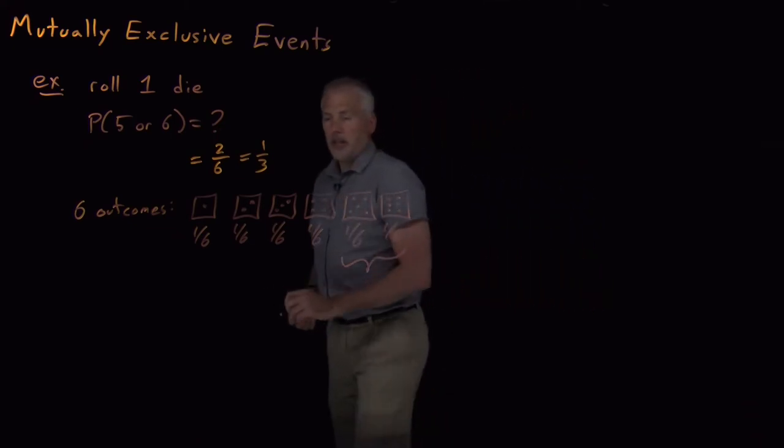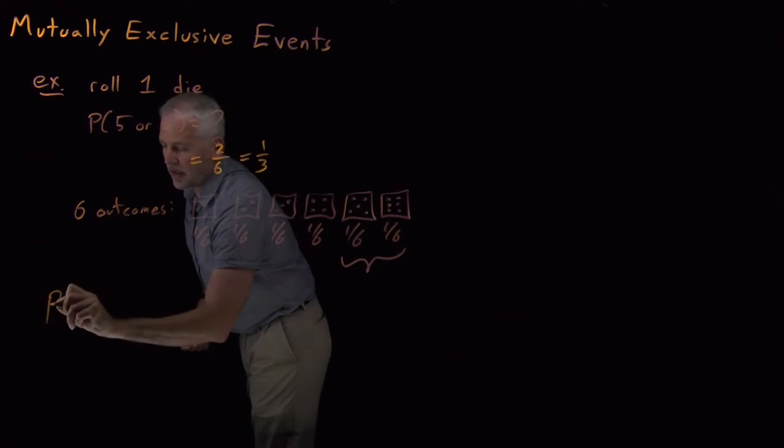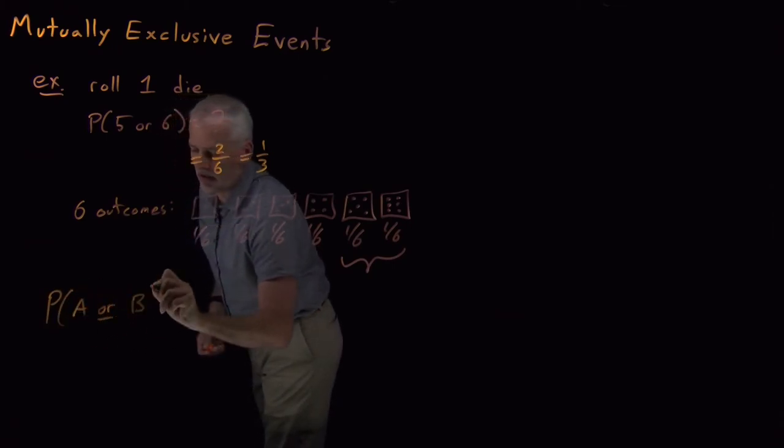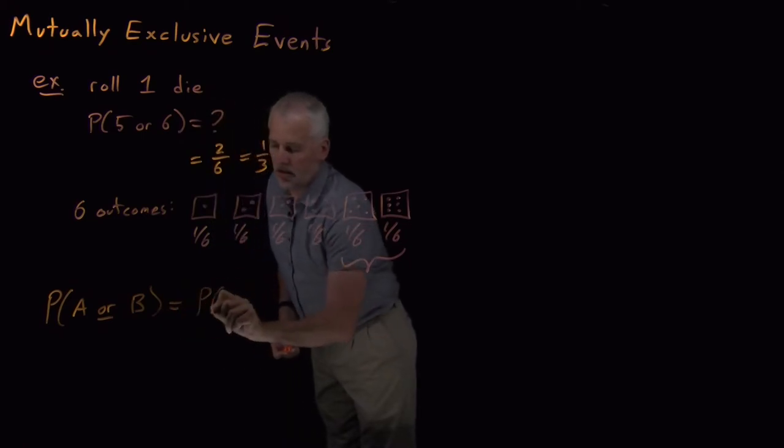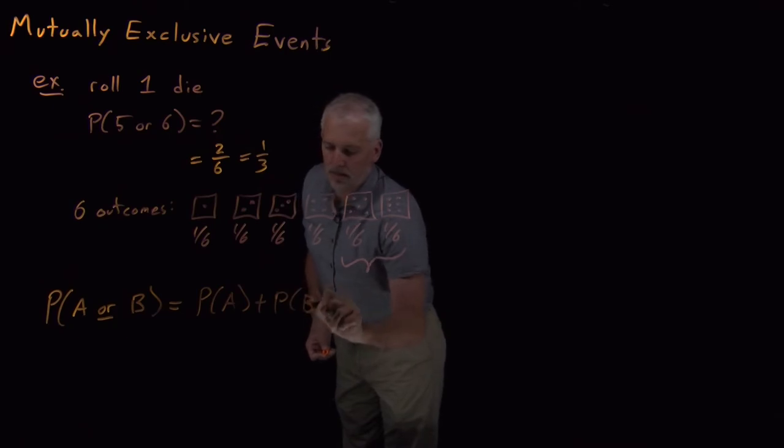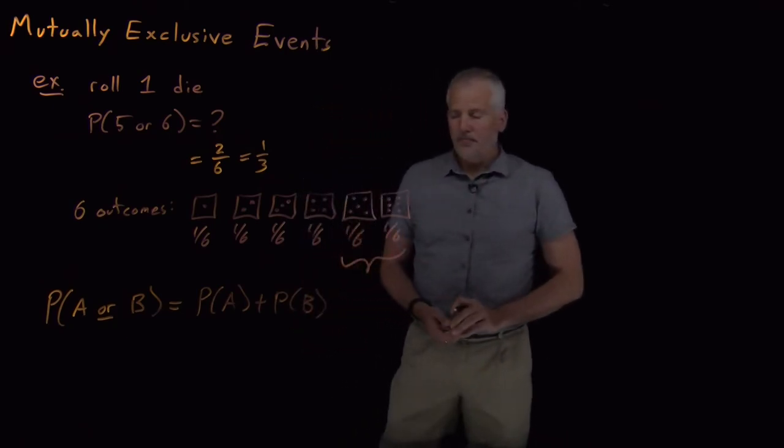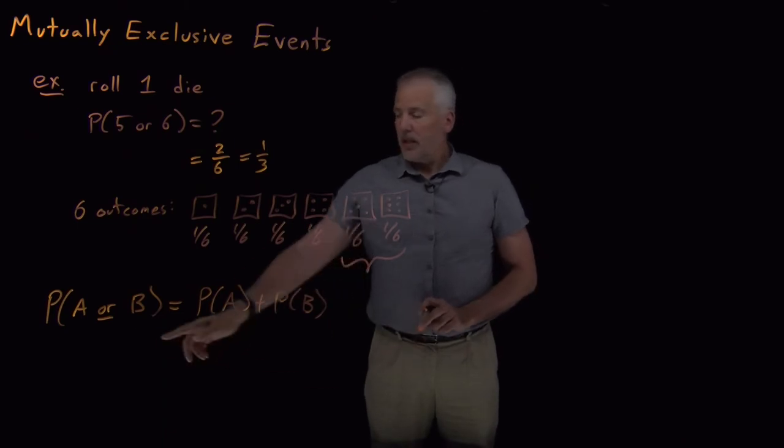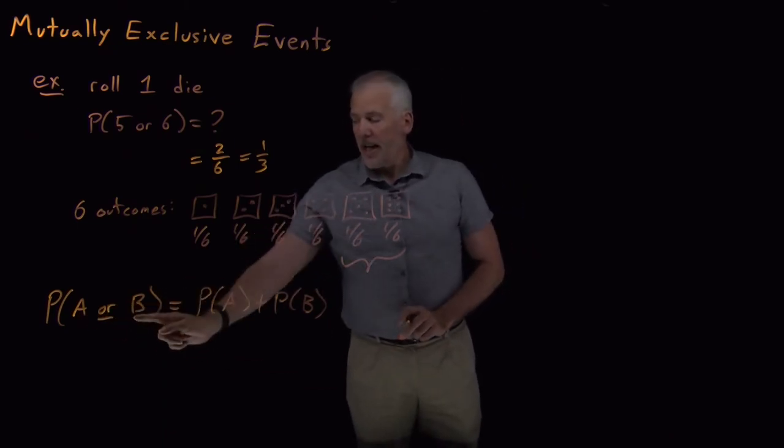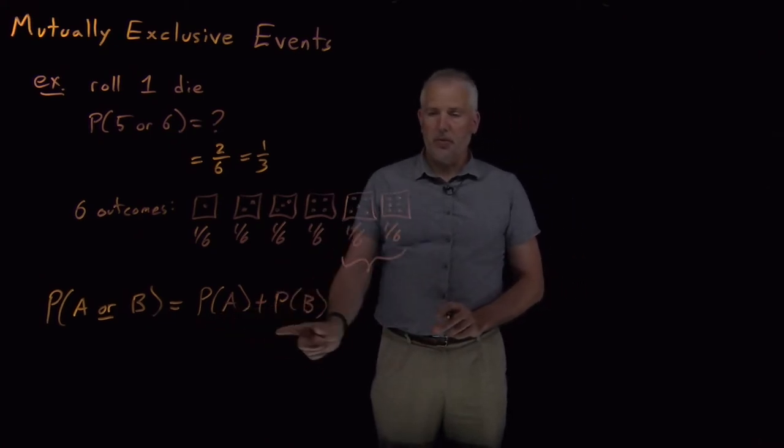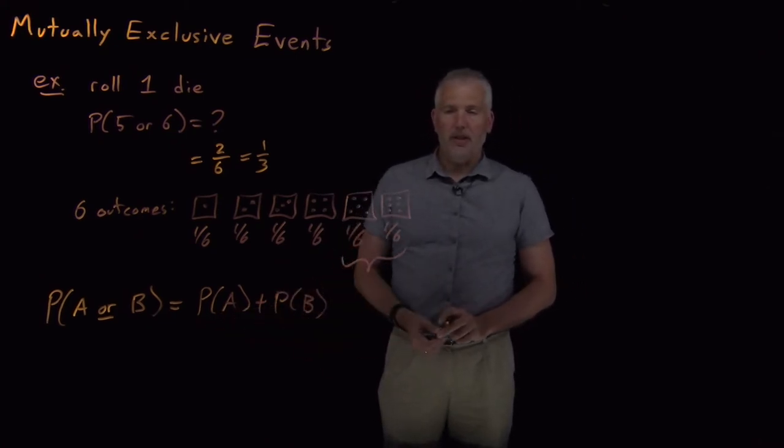So what we intuitively did without thinking about it was we use this rule which describes what happens when we have mutual exclusive events. The probability of some event A happening or some event B happening, rolling a five or rolling a six, is the probability of the first one plus the probability of the second one.